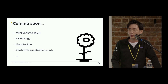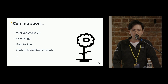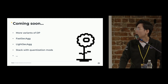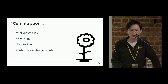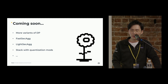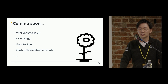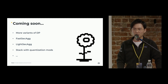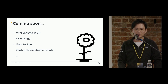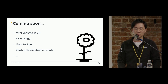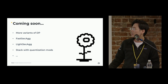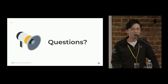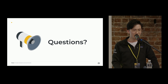We will continue working on this, and in the future you can expect to see more variants of differential privacy, the FastSecAgg protocol, the LowSecAgg protocol, and we also plan to separate out the built-in quantization mechanism in the SecAgg protocol so that you can freely choose whatever quantization algorithms you like. That's pretty much everything we'd like to share about differential privacy and SecAgg.